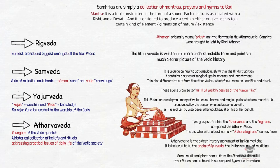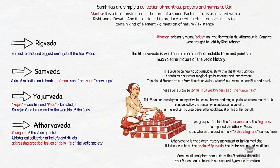The Atharva Veda is said to be the oldest literary monument of Indian medicine and is believed to be the origin of Ayurveda, the Indian science of medicine. Some medicinal plant names from the Atharva Veda and other Vedas can be found in subsequent Ayurvedic literature. This was a brief overview of the four Samhithas; we shall discuss in detail while dealing with the Vedic Age chapter.